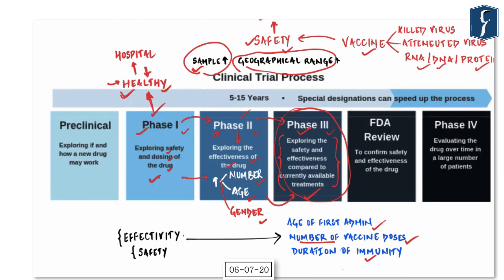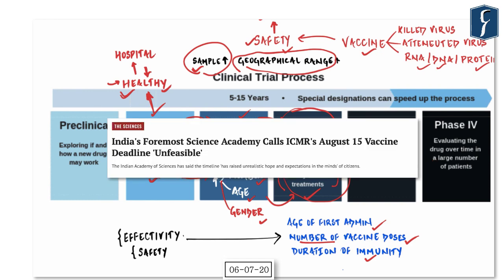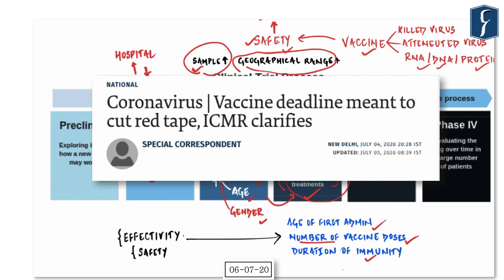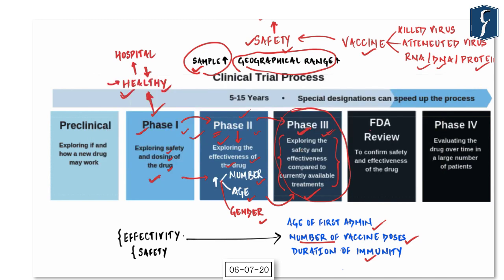ICMR put out a notification suggesting that since Phase 1 and Phase 2 trials were done, the manufacturer should hasten Phase 3. Prominent doctors and scientists worldwide opposed this move. ICMR then clarified that they are not in favor of skipping Phase 3 — they simply wanted to remove bureaucratic red tape delaying Phase 3 results. The matter of fact remains that COVID-19 being a dangerous pandemic does not justify launching a vaccine that does not conform to global standards.